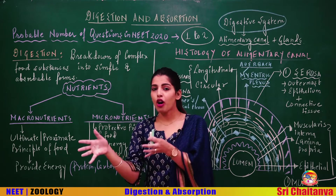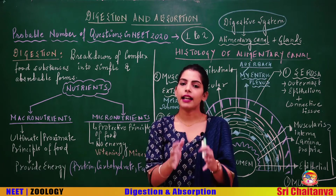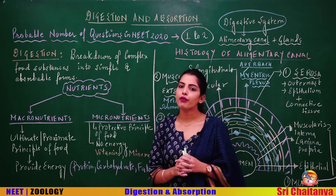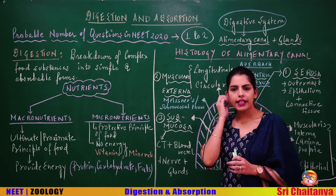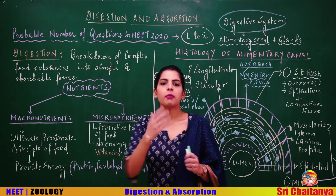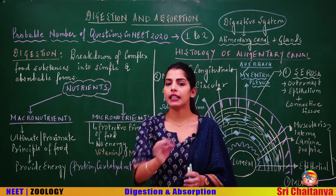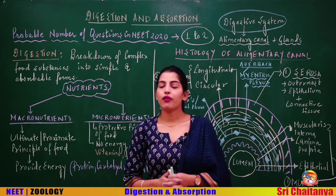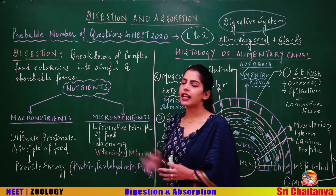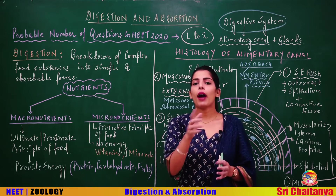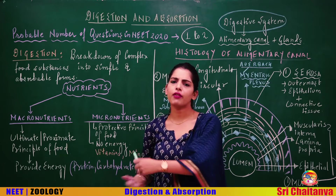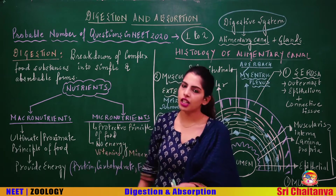These macronutrient components provide direct energy and are hence called the proximate or ultimate principle of food. Whereas certain components like minerals and vitamins do not provide energy — they are micronutrients or protective nutrients. They are called protective because their deficiency leads to various health problems.